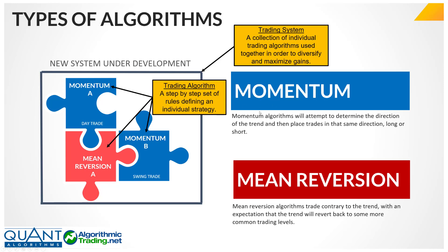A momentum algorithm attempts to determine the direction of the trend and then places a trade in that same direction, either long or short. So you could have a long momentum or a short momentum, and it could trade the S&P, the 10-year, gold, or whatever asset you want to trade.